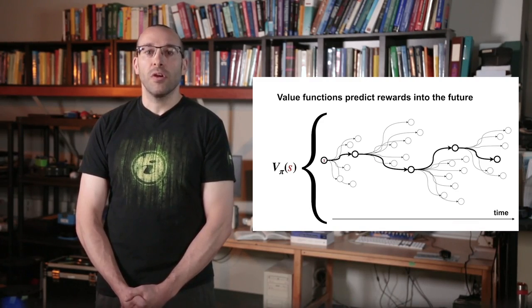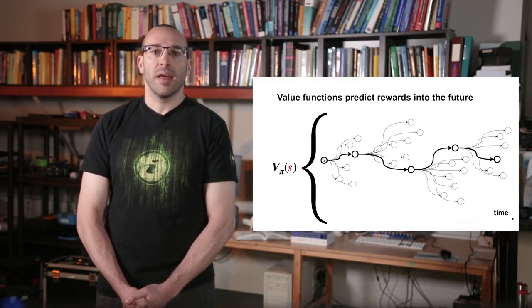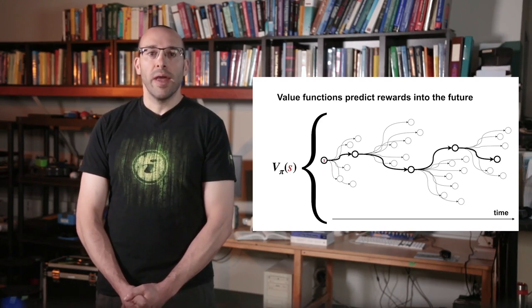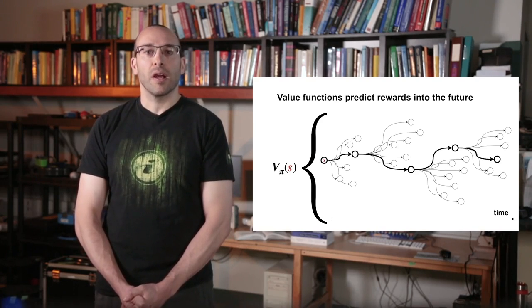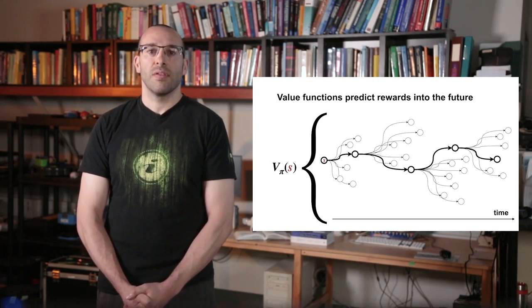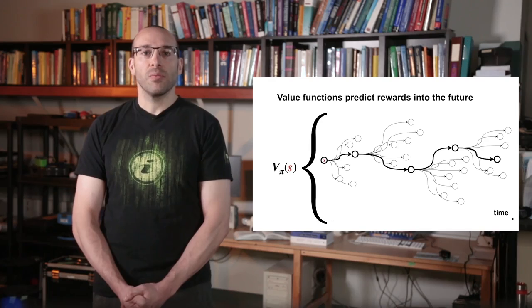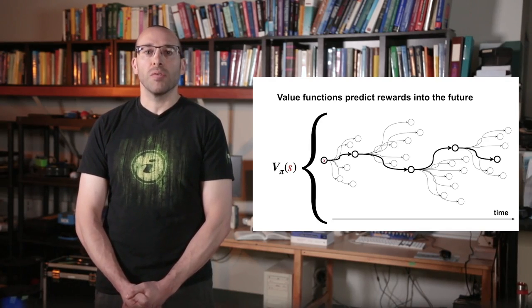First, the return is not immediately available. And second, the return may be random due to stochasticity in both the policy and environment dynamics. The value function summarizes all the possible futures by averaging over returns.